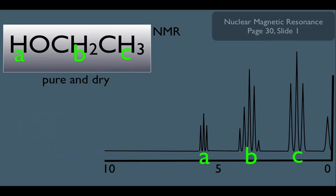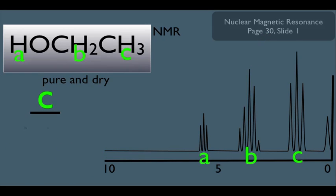Lastly, for the C-type hydrogens, what are their N-values? Well, their only neighbors are the B-type hydrogens. There happens to be two of them, so the N-plus-1 rule here equals 3. Therefore, we should expect to see them as a triplet.